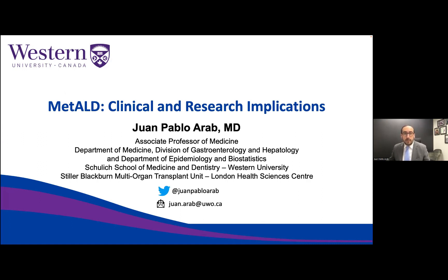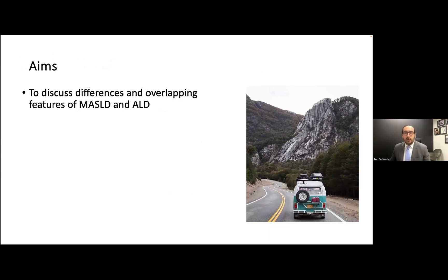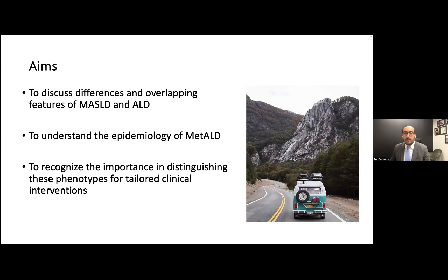So it's true. Now I'm going to talk about MET-ALD. We all knew that we have those patients where the metabolic dysfunction is leading the process. Then you have the patient where it's clearly only alcohol. But what happened with those patients that are in the middle — those ones that have dual etiology, or where there is some overlap between both. So today we are going to discuss the overlapping features between MASLD and ALD, try to understand a little bit the epidemiology of MET-ALD, and then recognize the importance of distinguishing MASLD from ALD.